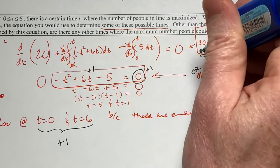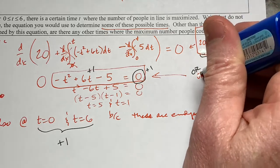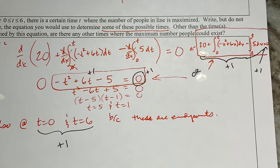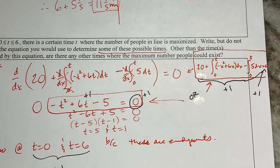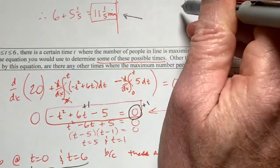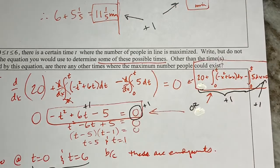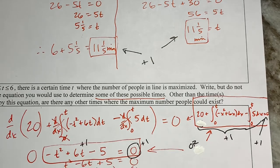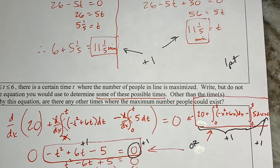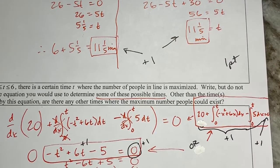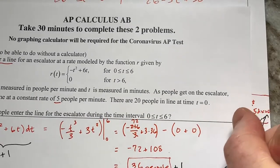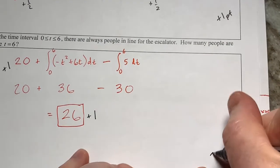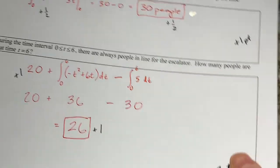For scoring part D: one point for the answer of 11 and one-fifth minutes. Part E: two points for the expression, one for the initial condition, one for setting it equal to zero, one for the equation, and one for including endpoints. That brings the total for problem one to roughly eight or nine points. I know it's a bit of a mess — largely because I made these problems up to fit the narrative.